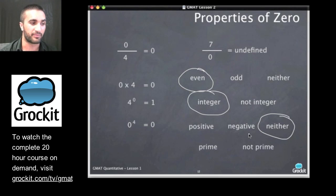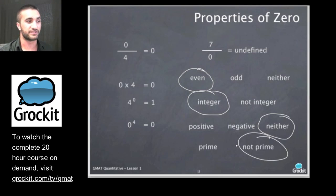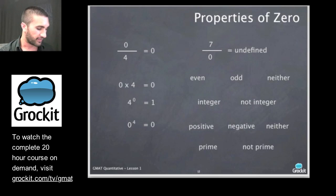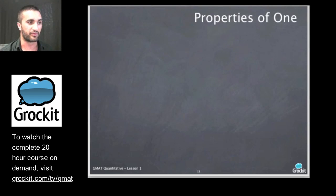And how about prime or not prime? Remember that one? It's not prime. Very good. Very, very good. So you got to memorize these points. Zero is an even integer. You can't divide by zero. Zero divided by something is zero. Anything to the zeroth power is one. No way around it but memorizing these.